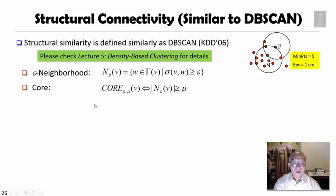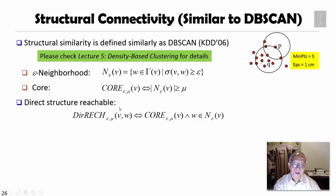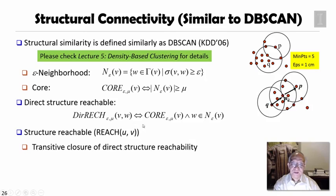For core, essentially if this epsilon neighborhood, the number of such epsilon neighborhood is greater or equal to minimum support threshold mu. If V's neighbors is no less than a threshold, then V is a core. Based on this, we can derive directly structure reachable. Directly structure reachable means V is a core, and W is directly reachable, then V will be directly reachable to W.